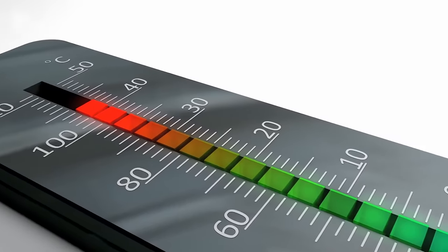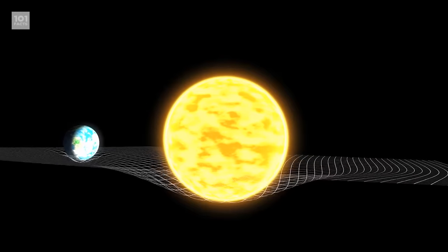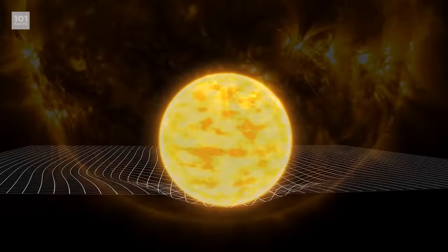These extreme temperatures allow particles to move faster in the corona, and they go so fast that they're able to escape the sun's gravity. Once escaped, these particles make up the solar wind.